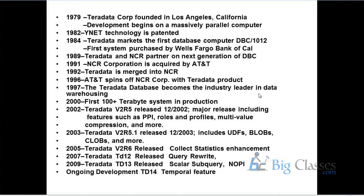The columnar feature is similar to databases like Vertica, where data is stored from a column perspective — each column is stored as a single entity. This feature has been implemented in Teradata. So if you want to store data row-wise, you can store it row-wise. If you want to store data column-wise, you can store it column-wise.